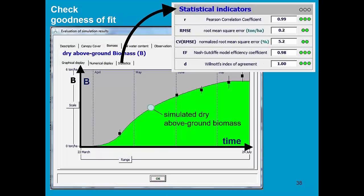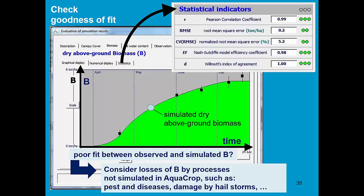In AquaCrop we can check the simulated dry above-ground biomass with the help of statistical indicators. If there is still a poor fit between observed and simulated biomass, then maybe we need to consider losses of the biomass by processes which are not simulated in AquaCrop.